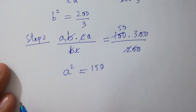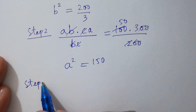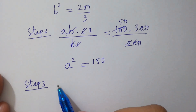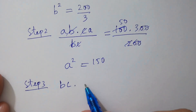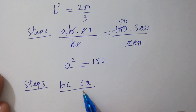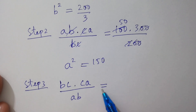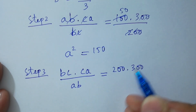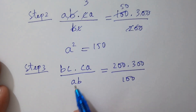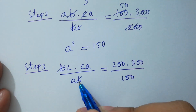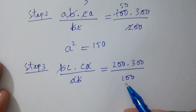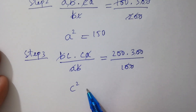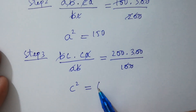Step 3: multiply the second equation by the third equation, then divide by the first equation — that is, (bc × ca) / ab, which equals (200 × 300) / 100. Here, b and b will be cancelled, a and a will be cancelled. We get c squared equals 600.